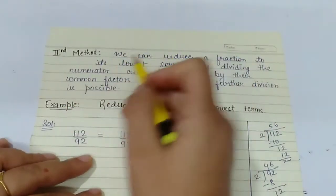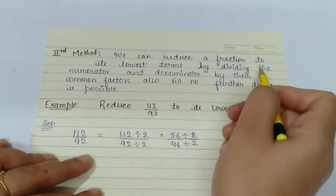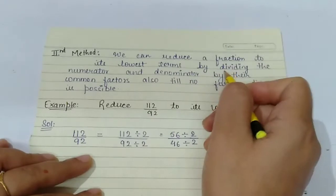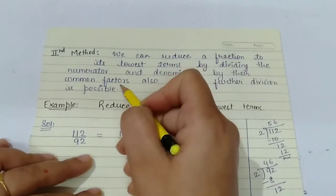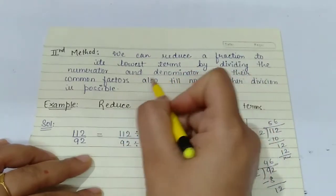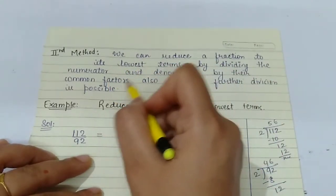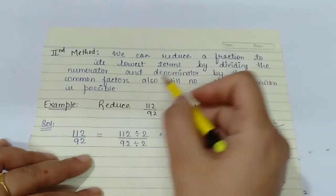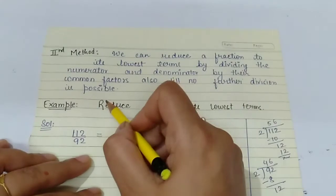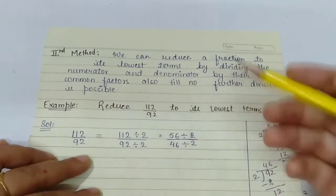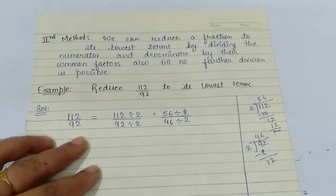Now the second method: we can reduce a fraction to its lowest terms by dividing the numerator and denominator by their common factors — not necessarily the HCF — and continuing until no further division is possible. Let us take an example.